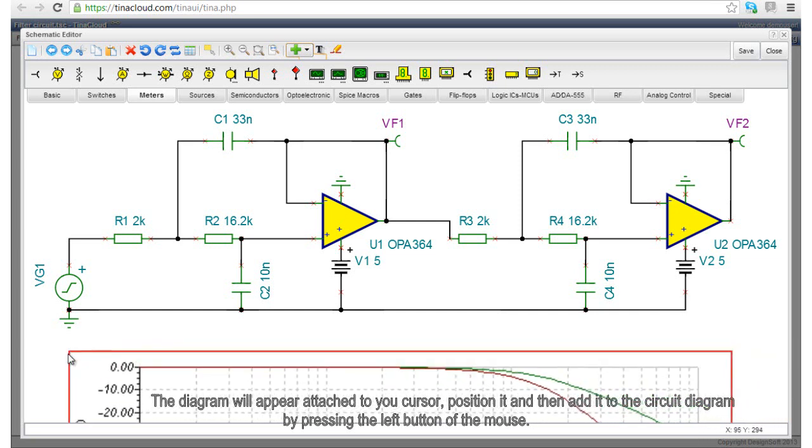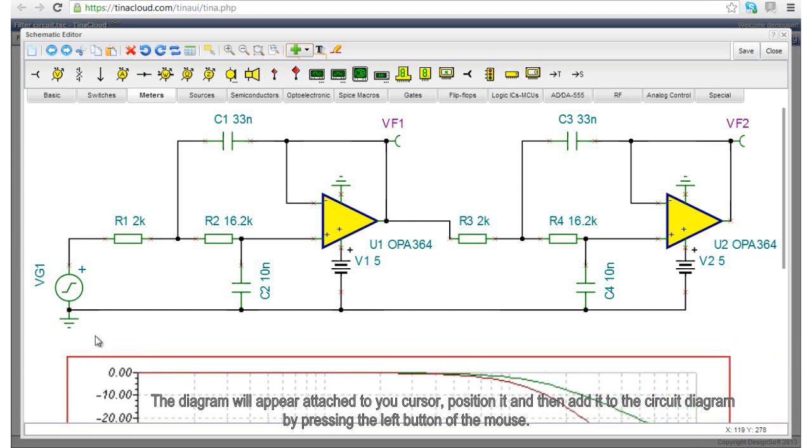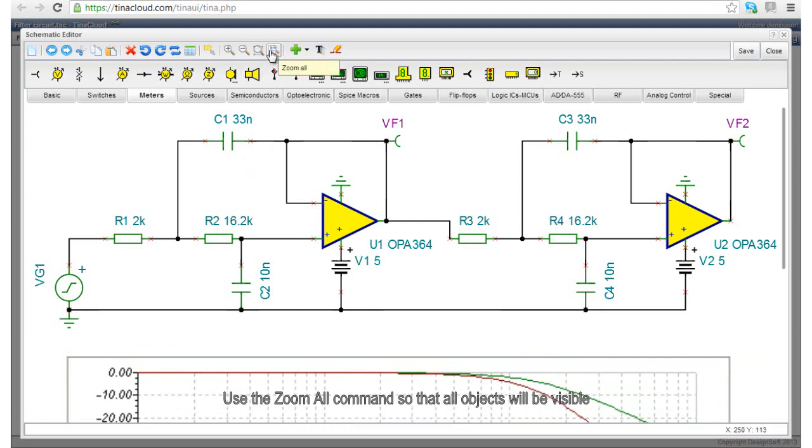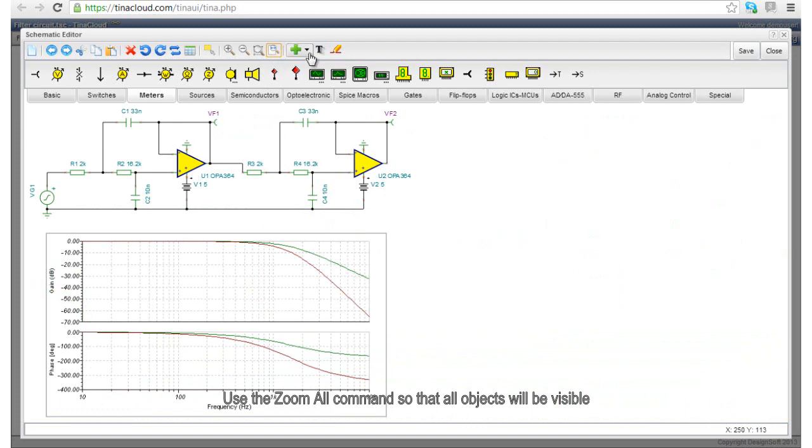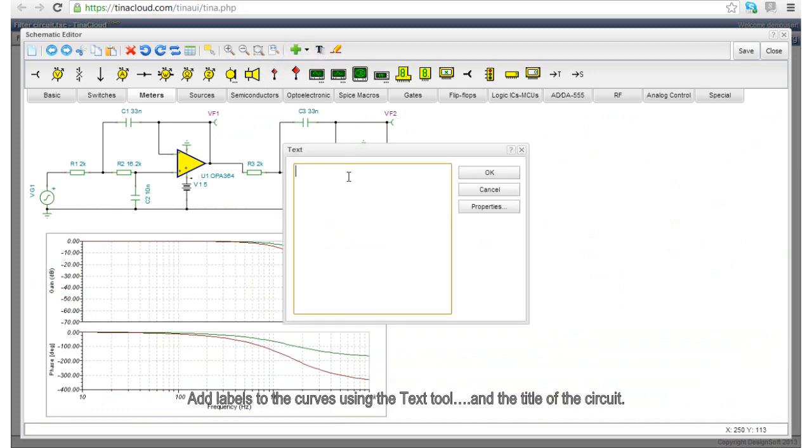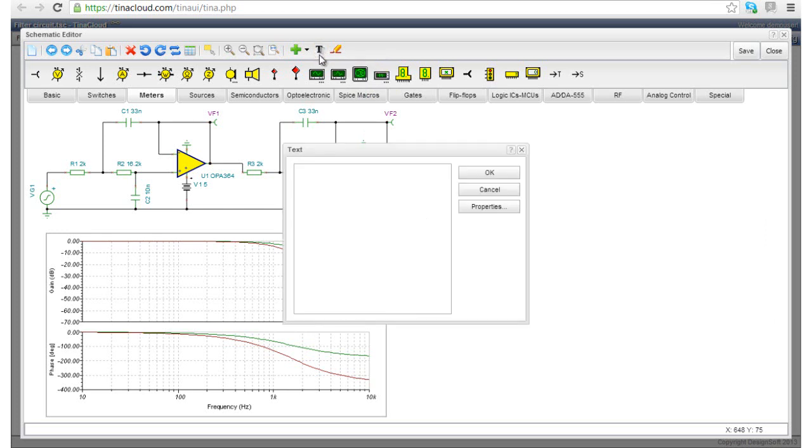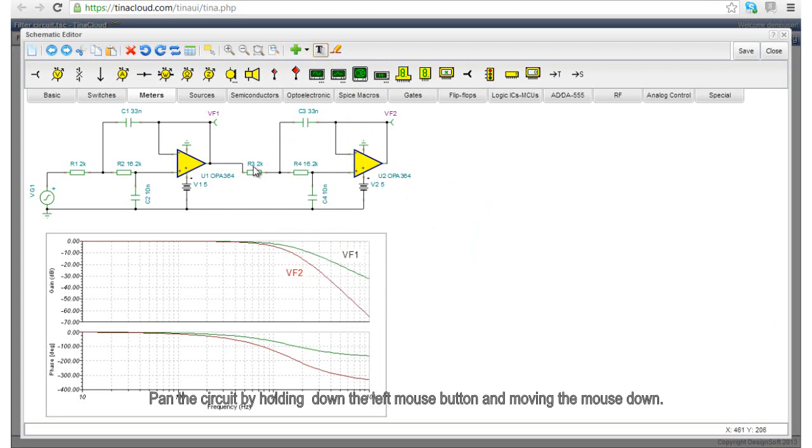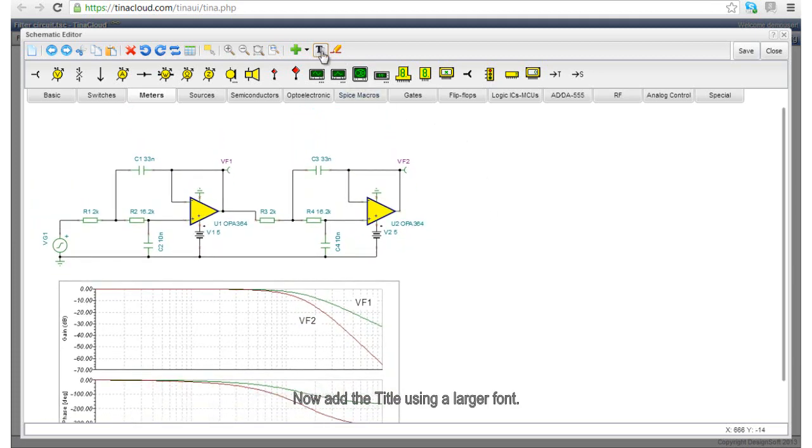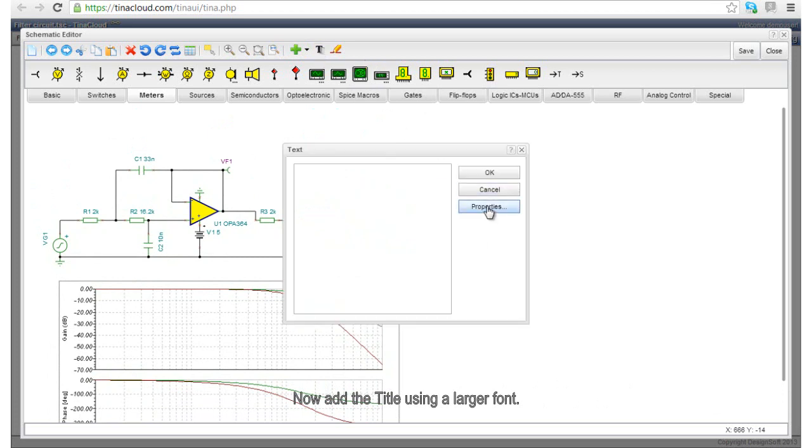The diagram will appear attached to your cursor. Position it and then add it to the circuit diagram by pressing the left button of the mouse. Use the Zoom All command so that all objects will be visible. Add labels to the curves using the Text tool and the title of the circuit. Pan the circuit by holding down the left mouse button and moving the mouse down. Now, add the title using a larger font.